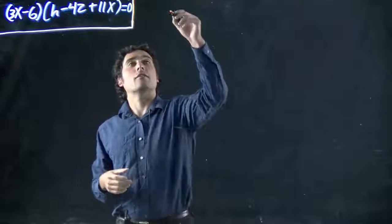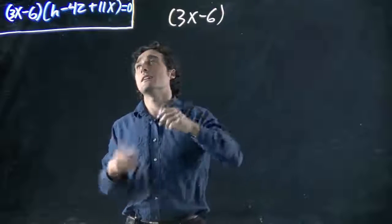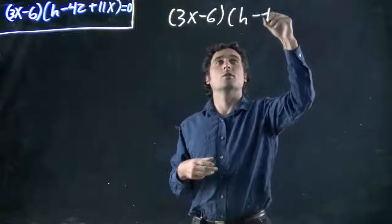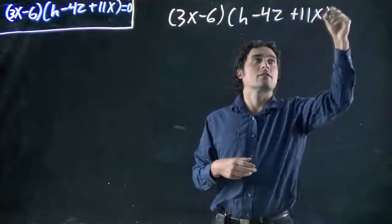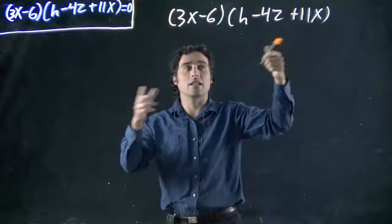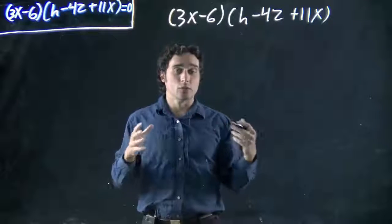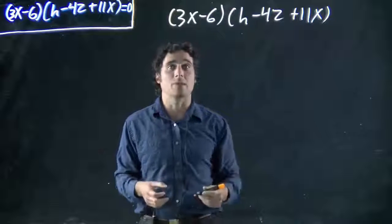So what do we got? In our first bracket, we have 3x minus 6. Second bracket, we have h, a variable, minus 4z, another variable, plus 11x. So we don't even have x's at the beginning, doesn't matter. Doesn't matter if the x is the beginning or the end, the rules are all going to apply. The fact that we have variables doesn't matter. The math is always the same.